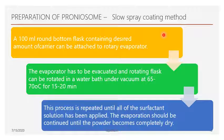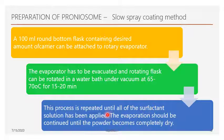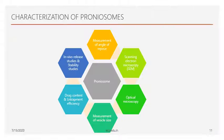In the slow spray coating method, a round-bottom flask is taken containing a desired amount of carrier, membrane stabilizer such as cholesterol or lecithin, non-ionic surfactant, and the drug. It is connected to a rotary evaporator and evaporated for 15 to 20 minutes at 65 to 70 degrees Celsius until the powder becomes dry. The process is repeated until all the surfactant solution has been applied and a dry powder is obtained.